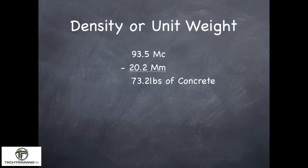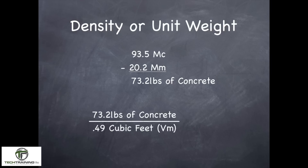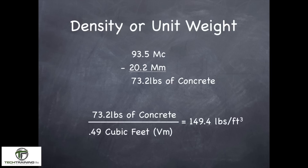The first thing we want to do is figure out what is just the weight of our concrete. We do that by taking the 93.5 pounds — this is M subscript C, or the weight of the measure filled with concrete — minus the weight of the measure, M subscript M. We wind up with 73.2 pounds of concrete. We know that the volume of our measure was 0.49 cubic feet. So if we do the division, 73.2 pounds divided by 0.49 cubic feet, we wind up with 149.4 pounds per cubic foot of concrete.